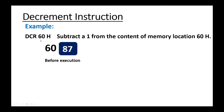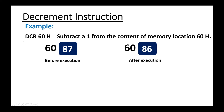Next instruction is DCR 60h. 60h is a direct address of the internal RAM. This instruction is subtracting one from the content of that memory location at 60h. The memory location is holding 87 before execution, and after execution the content of that same memory location becomes 86.